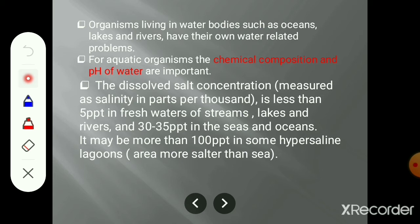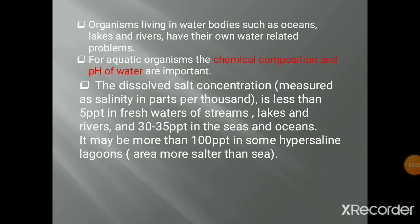What is salinity of water? The dissolved salt concentration is nothing but the salinity, which is measured in parts per thousand. The salinity in freshwater streams is less than 5 parts per thousand, while in lakes and rivers it is also around 5 parts per thousand. In case of seas and oceans it is 30 to 35 parts per thousand. We can also observe hypersaline lagoons, which are areas more saline than the sea.